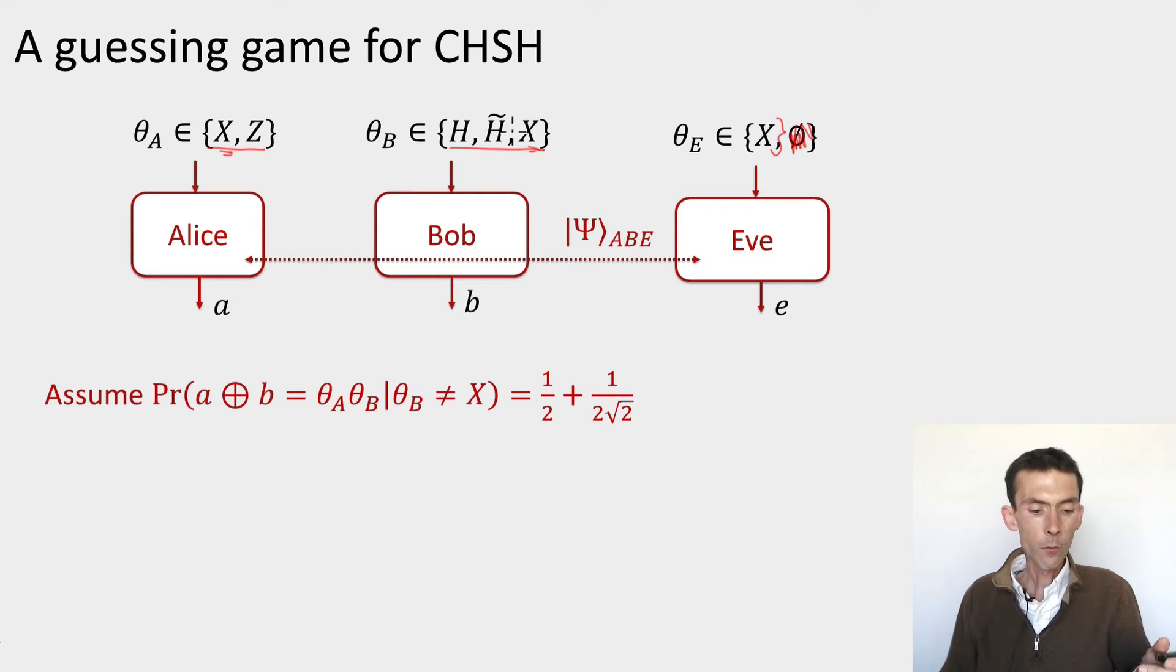And so the question that we're asking is the following. Suppose that I have any three devices that are set up in this way. These have been prepared by Eve beforehand. They share an arbitrary state psi A, B, E, that I know nothing about, and I know nothing about the measurements that are performed by either of these devices.